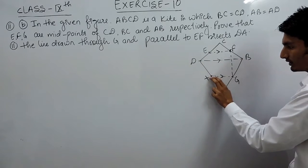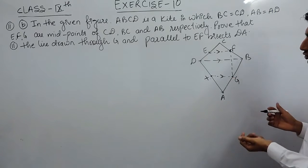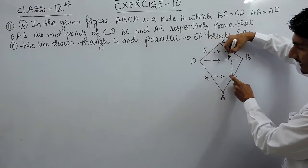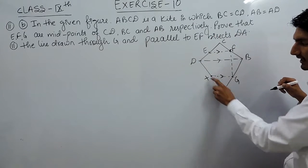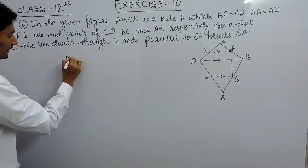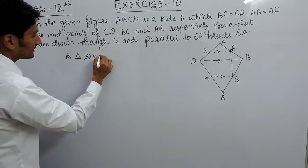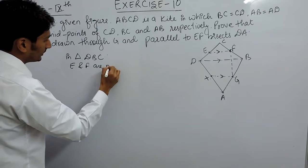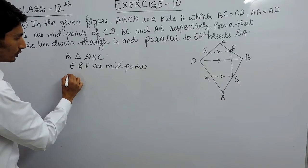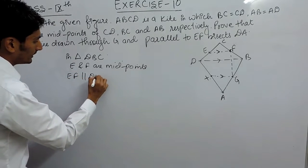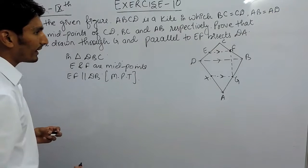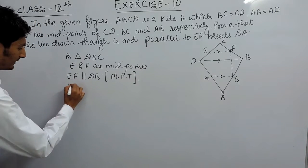So we have concluded that DB is parallel to XG. According to the midpoint theorem, if from a midpoint you draw a parallel line, it should meet the midpoint of the third side. Now let's solve formally: in triangle DBC, E and F are the midpoints — this is given. Joining the midpoints, by the midpoint theorem, EF must be parallel to DB.